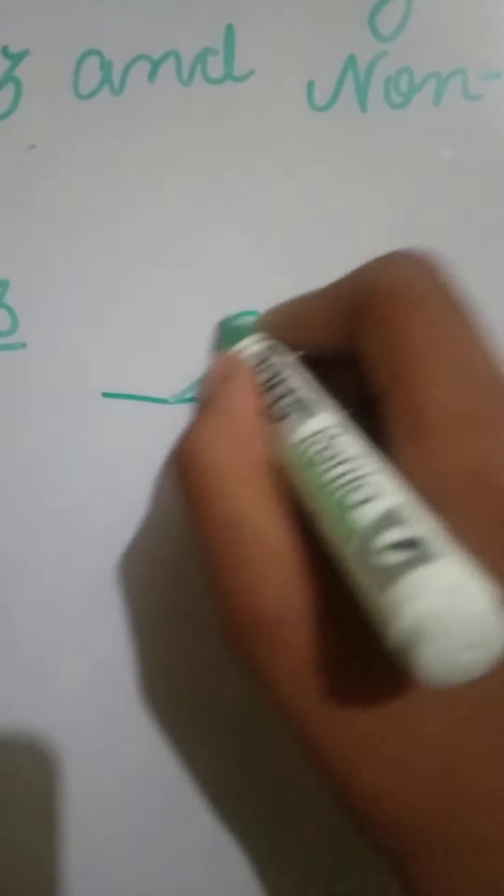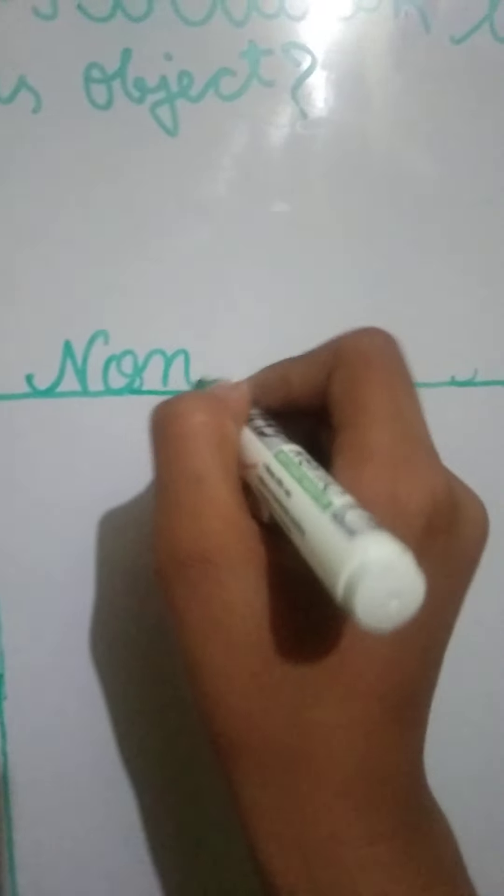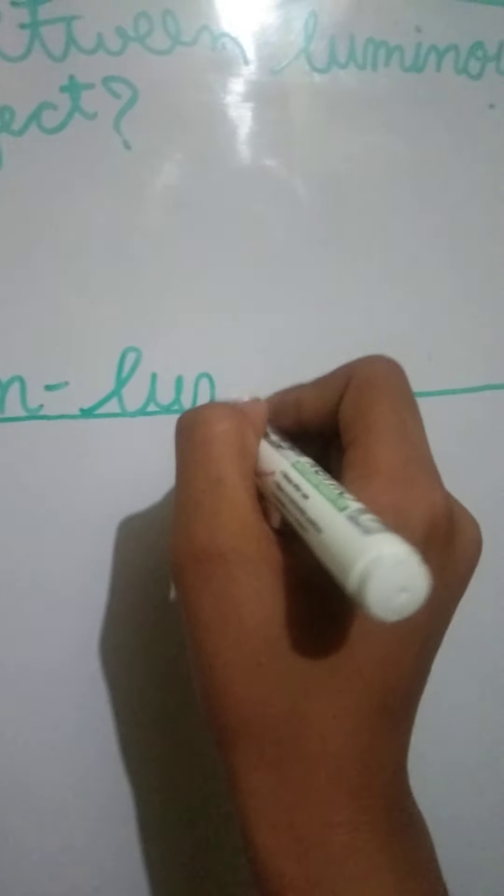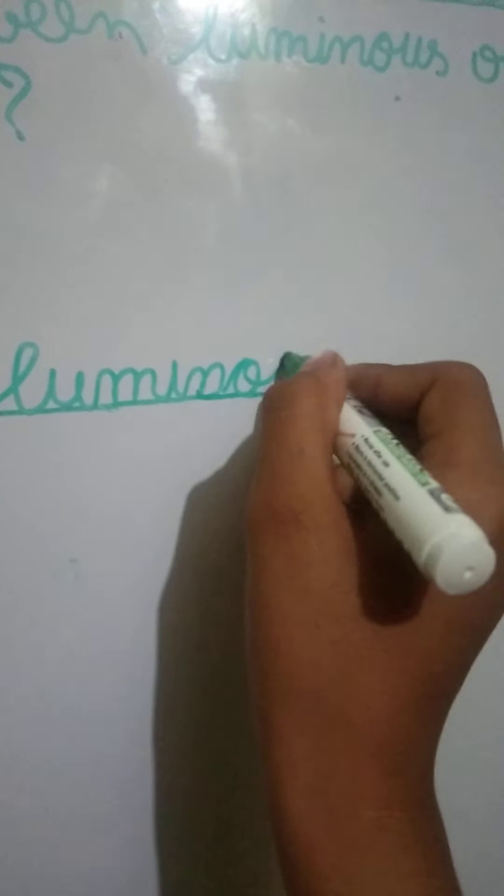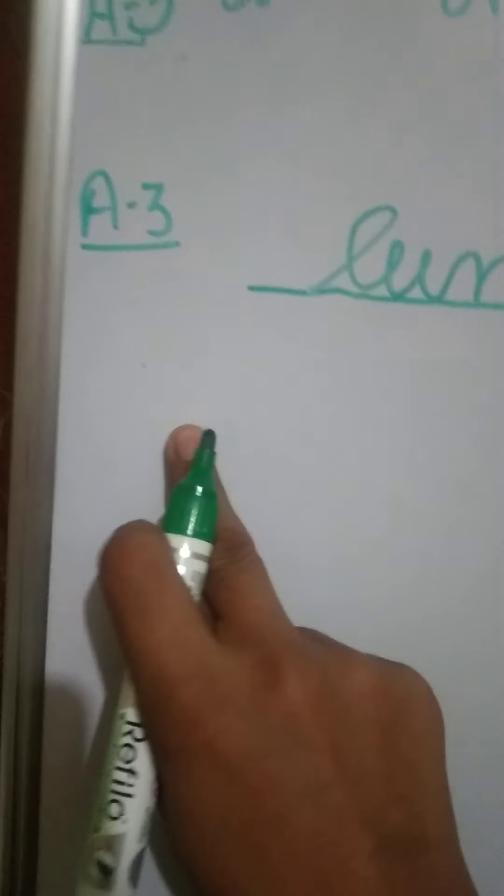So we start with luminous objects and non-luminous objects. First of all, we will compare luminous and non-luminous objects. We have to tell any two differences between luminous object and non-luminous object. Let's look at the first difference.